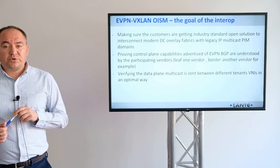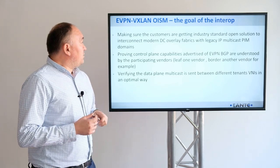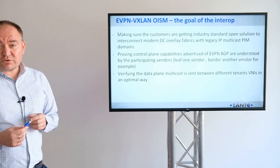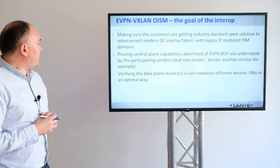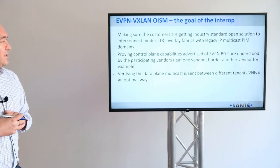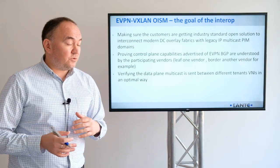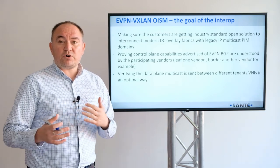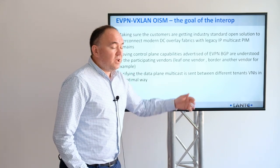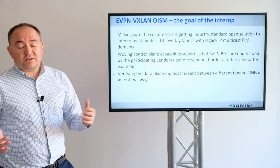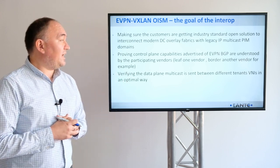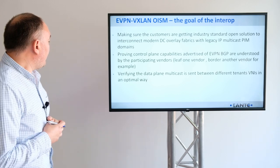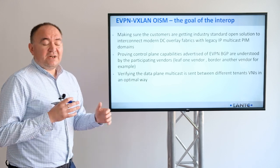The goal of the interoperability at ENTC 2021 was really to make sure customers are getting an industry-standard and open solution to interconnect modern data center overlays with the existing IP domains. The second aspect is providing control plane capability verification between different vendors. Whenever we consider open standards such as EVPN, we want to make sure these standards really help interoperability between different vendors — for example, leaf devices from one vendor and a border leaf from another vendor.